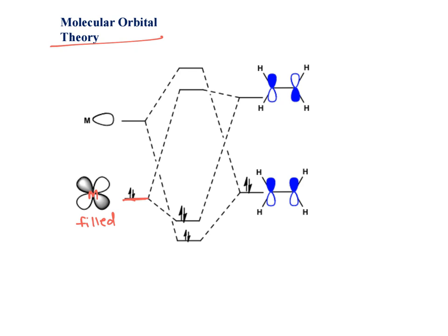These are empty orbitals of metal. Now, this is pi bonding and this is pi star anti-bonding, which can form a pi bond. This we are taking as pi orbital. And this is anti-bonding orbital, lobes are opposite, pi star.